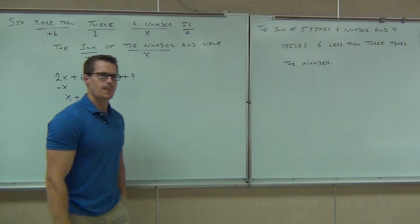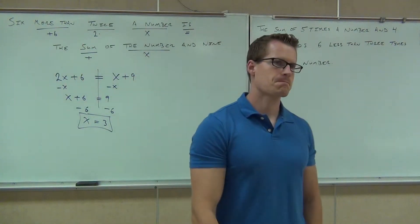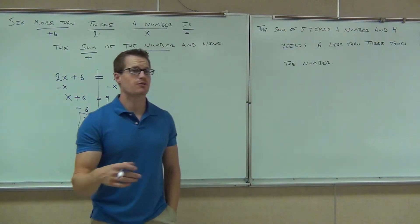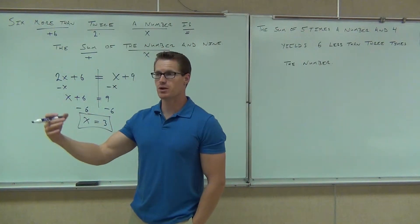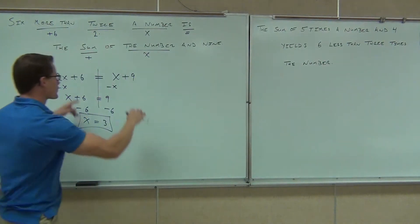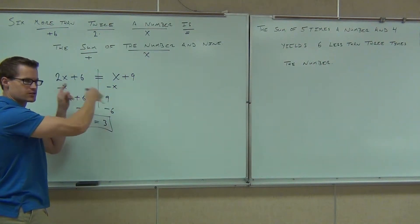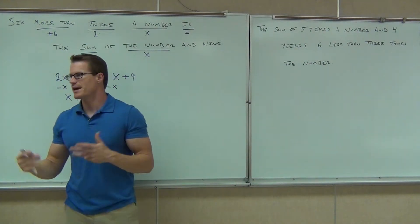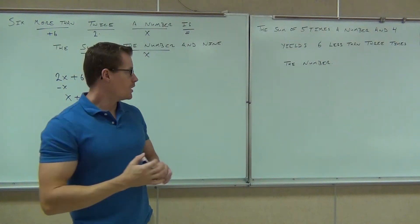Do you always have to subtract the variable first, or can you subtract six first? It's appropriate to get rid of the smaller variable first. That way you'll know where your variable is going to be located at the end. Because if you got rid of the wrong number, you're going to start moving stuff around even more, and that's extra steps we don't want. Okay, let's continue.